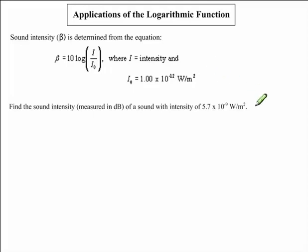We are asked to find the sound intensity, which is measured in decibels, of a sound with intensity of 5.7 times 10 to the exponent negative 9 watts per meter squared.